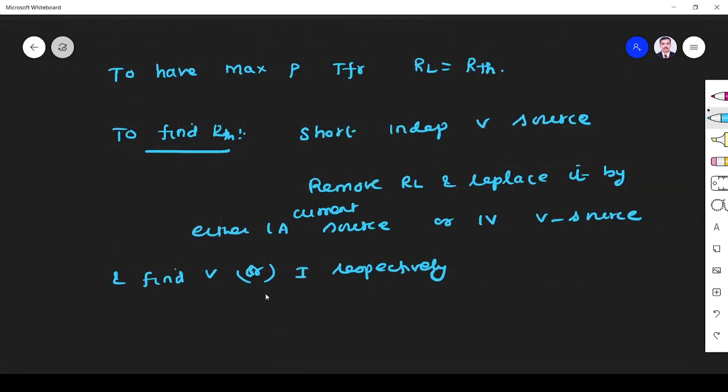Then R-thevenin is equal to - what is the answer? If it is 1 ampere current source, V by 1 ampere. R is nothing but V by 1 ampere. If V is equal to 1 volt, 1 by I. So if you replace by voltage source, 1 volt divided by current, you are finding current. If you replace by current source, you are finding voltage, that voltage divided by 1 ampere current source. So both of these are answers.